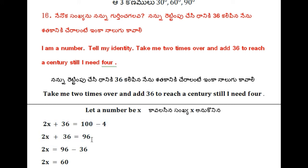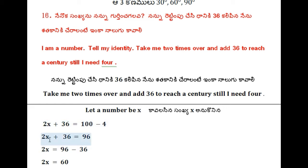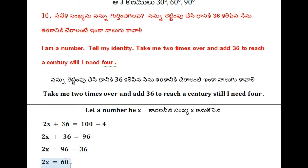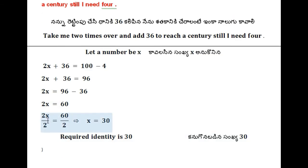Separating variables and constants. Subject lies on the left side of the equality — it is the first character. Subject must be alone. To make it alone, transposition of plus 36 becomes minus 36. So 2x is equal to 96 minus 36, which is 60.